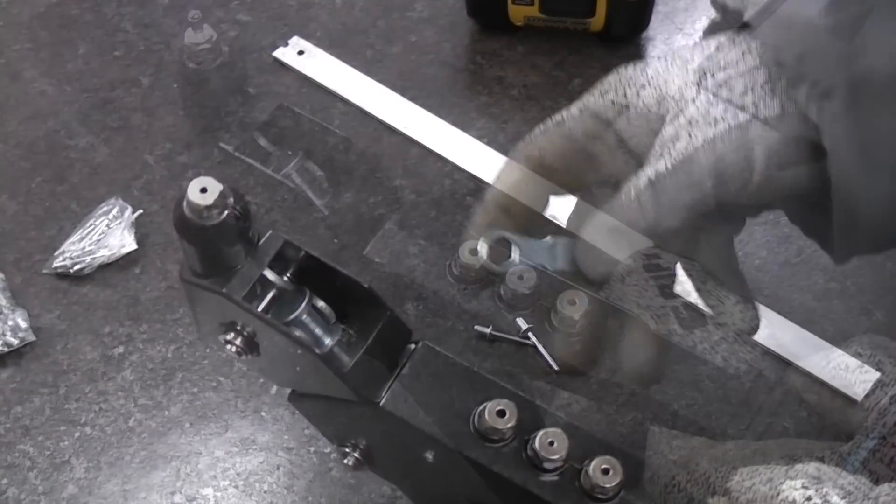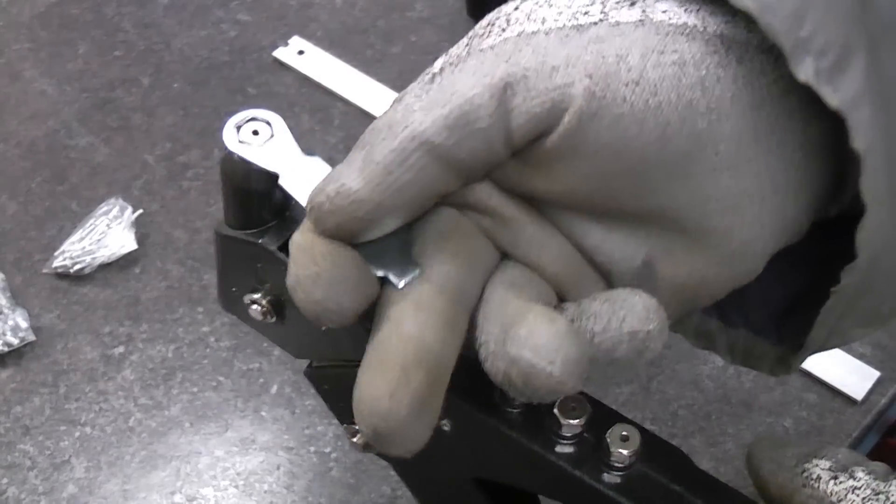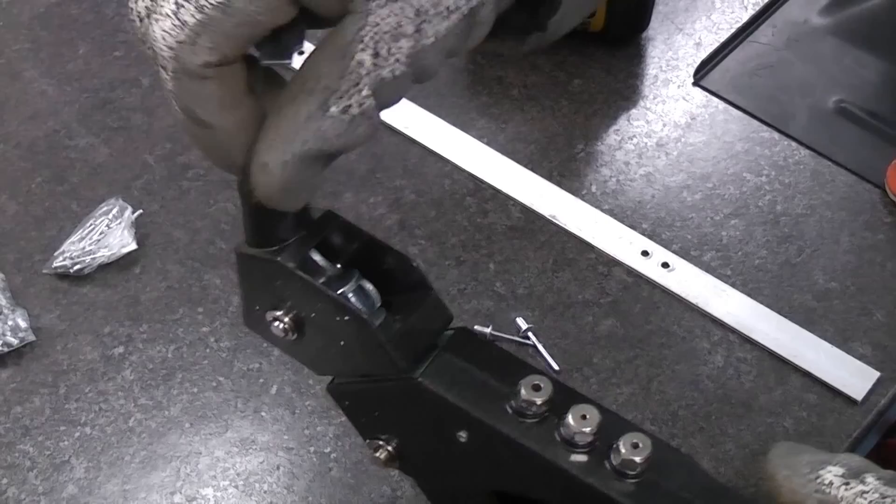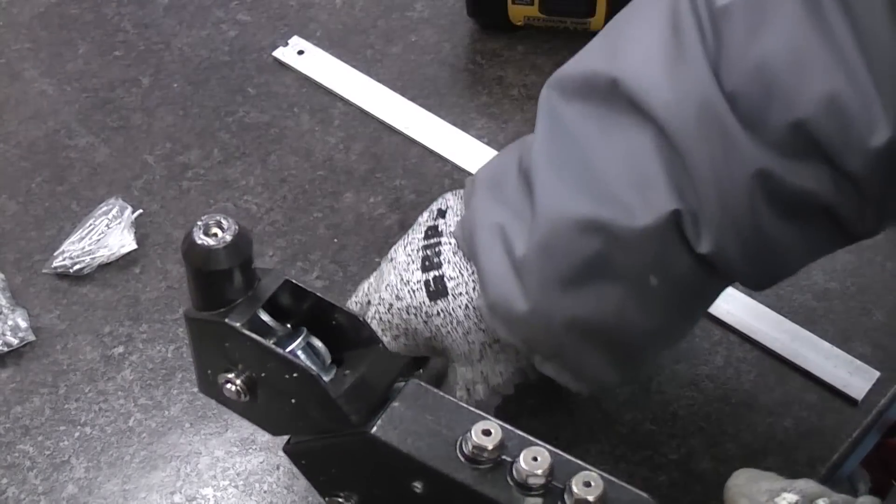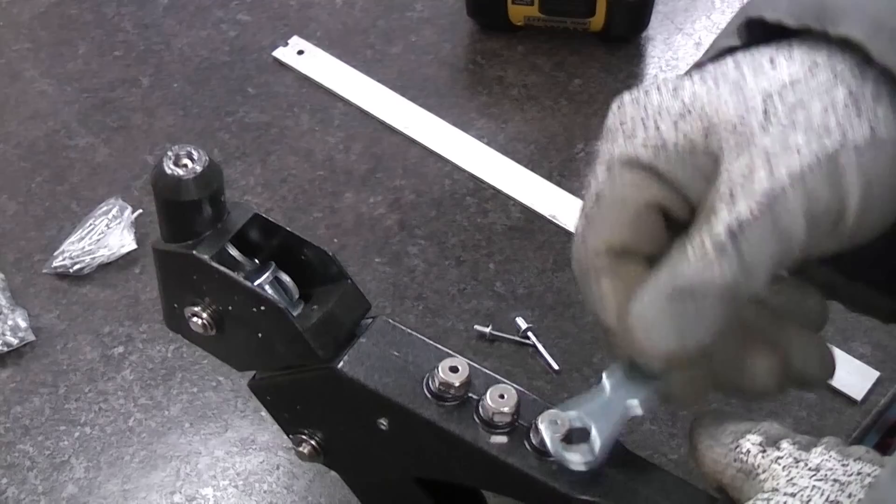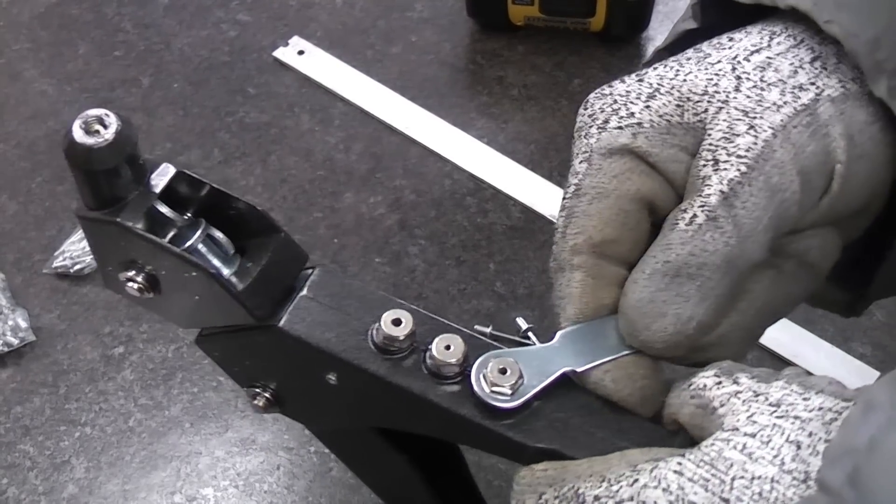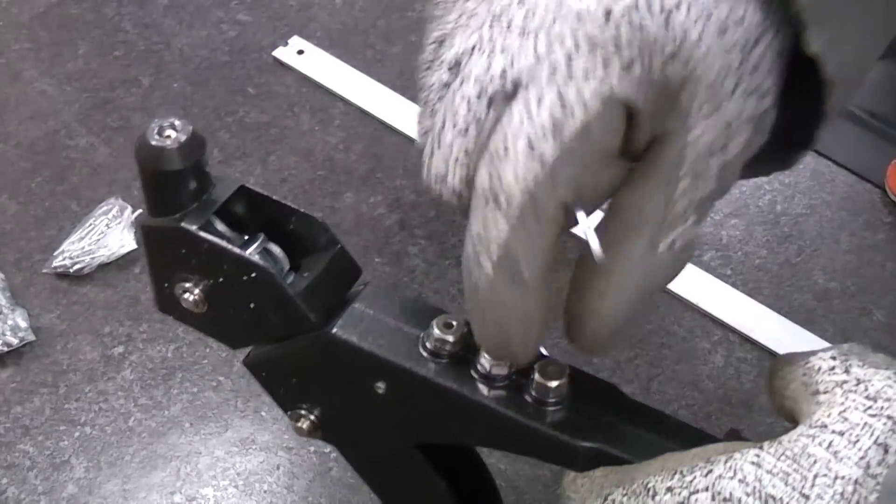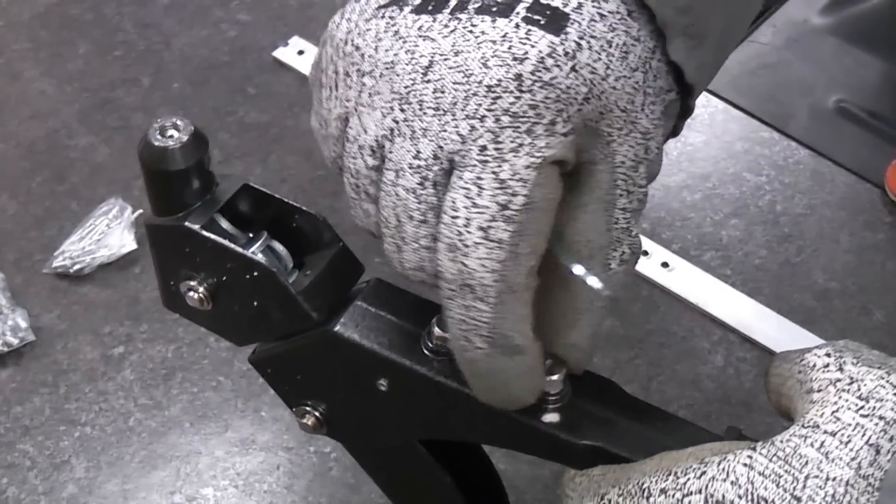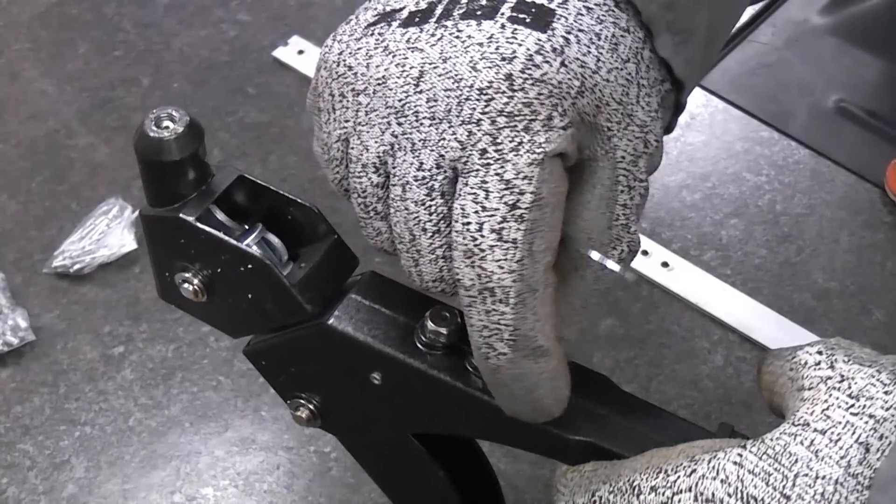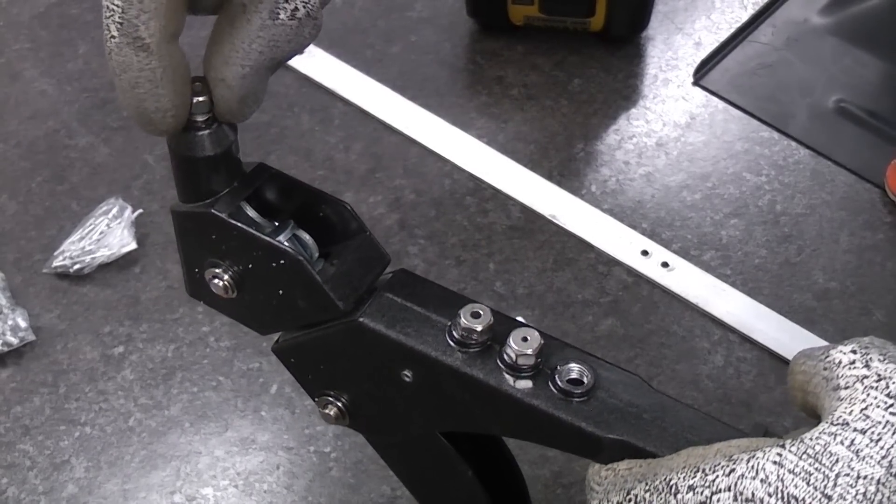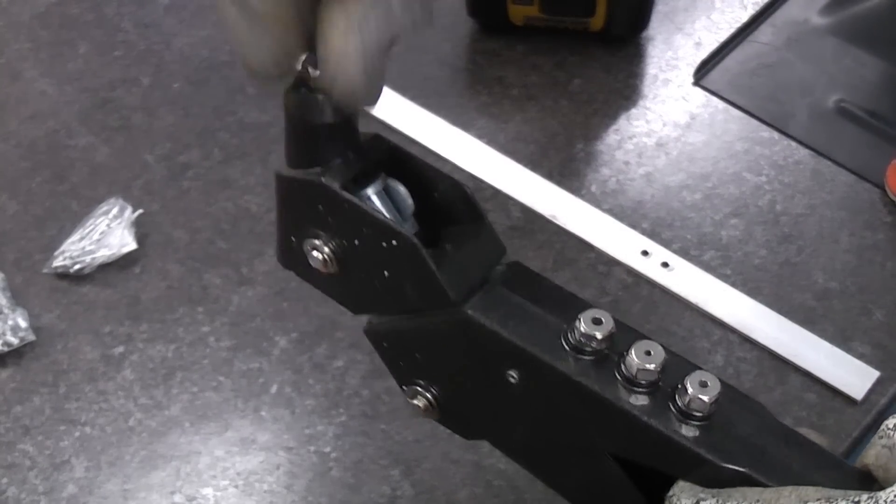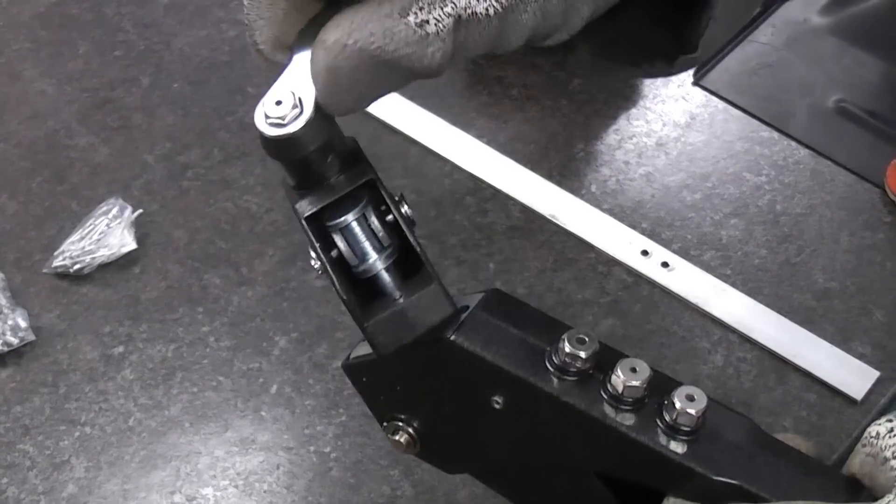These guns also usually come with a spanner which fits on there and you can just unscrew the nozzle. Then you can swap that for a different size one which is further down the gun here. So you would just unscrew that and then screw that in there if you were using that size nozzle. So we've put that back in there, we'll just nip that up.